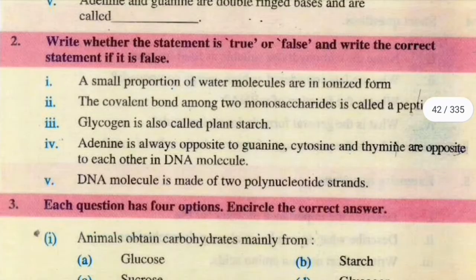Question number 2, write whether the statement is true or false. Number 1, a small proportion of water molecules are in ionized form. Yes, answer is true. Number 2, the covalent bond among two monosaccharides is called a peptide bond. Yeh answer hai false, because glycosidic bond hota hai.